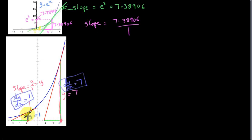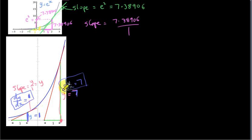Suppose that y equals 1 at one point and y equals 7 at another point over here. Multiplying the value of the function by 7 — going from 1 to 7 — means we also multiply the rate of change of the function by that same factor. So the rate of change dy/dx is 1 at the first point, and the slope of the tangent is 7 at the second point. If we multiply the value of the function by a number, we multiply the rate of change by that same number.